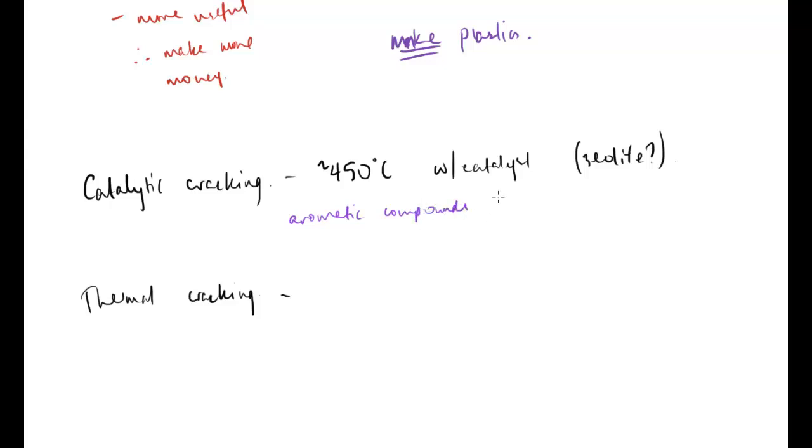The key thing with catalytic cracking is that we tend to form aromatic compounds and fuels. What I mean by aromatic compounds - don't worry at this level about that, this is more A2 - but aromatic means containing a benzene ring.